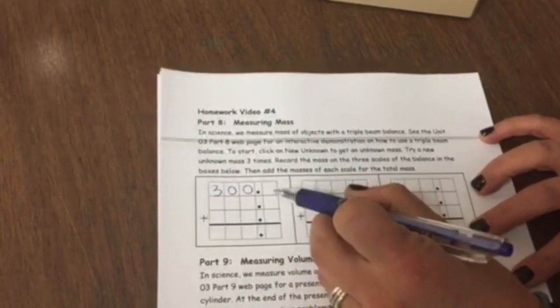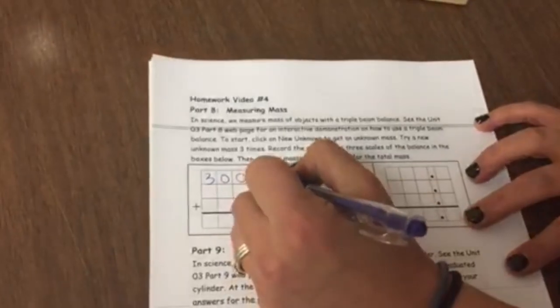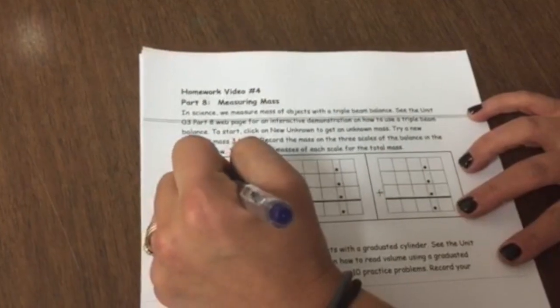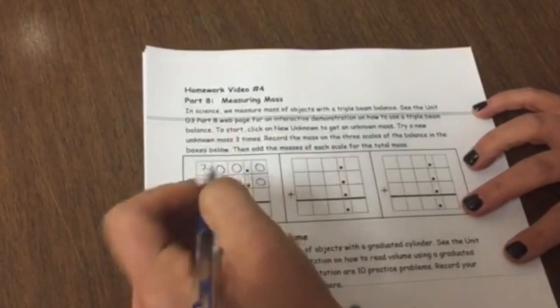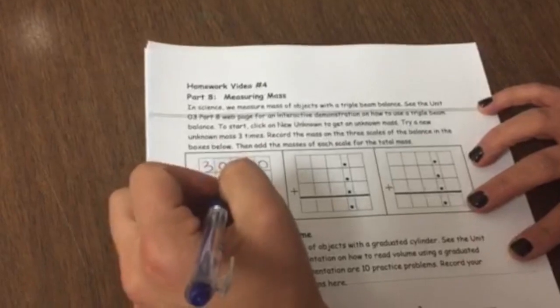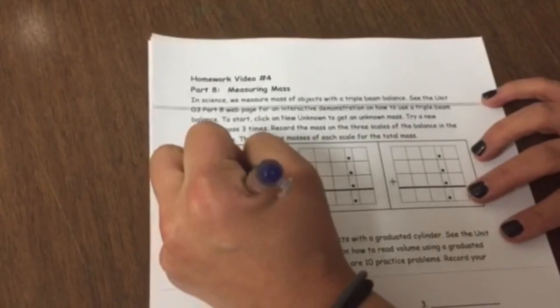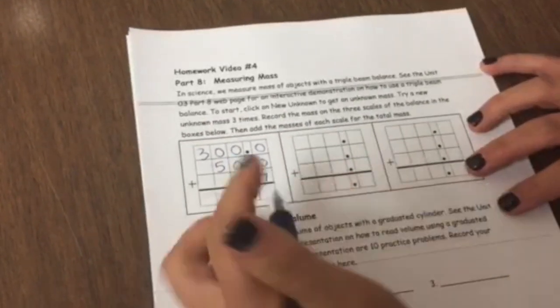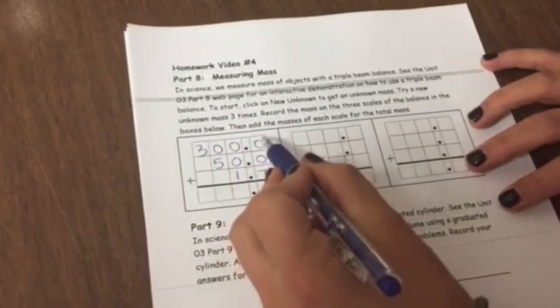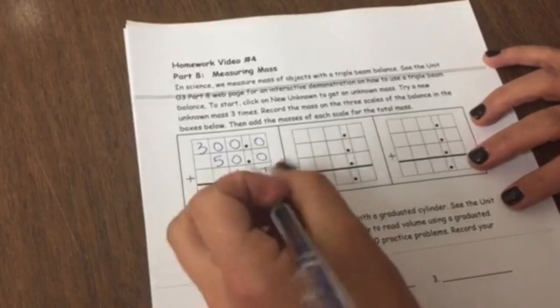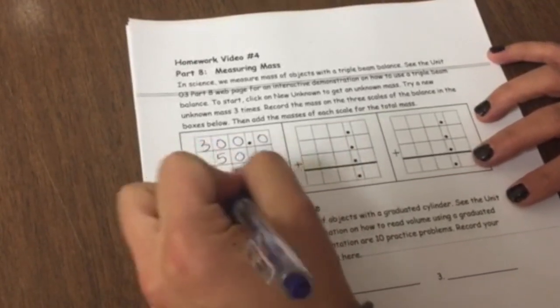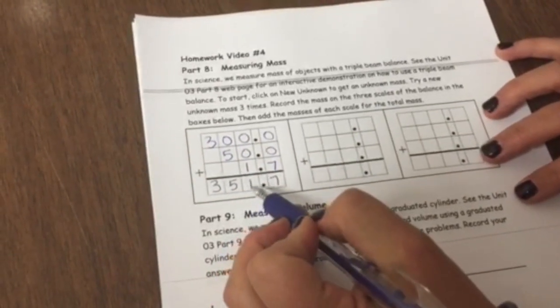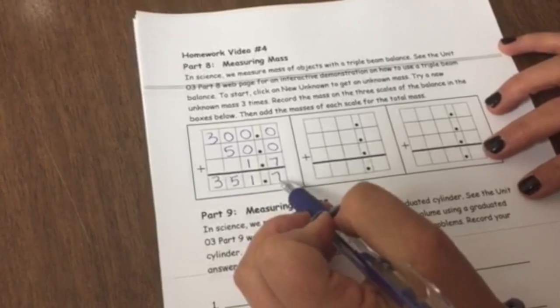I don't have any tenths place, so I'm just going to write zero. Then I'm going to write my 50 and zero tenths. Then I'm going to write in my ones place, which is one and seven tenths. So I'm going to write my tenths place with my decimal. Then I'm going to add them together. I'm going to start on the right side and add them together. So my total is 351 and seven tenths.